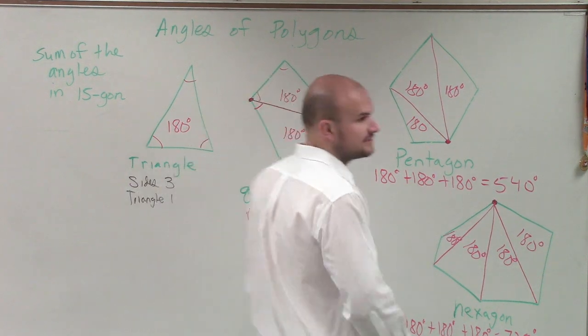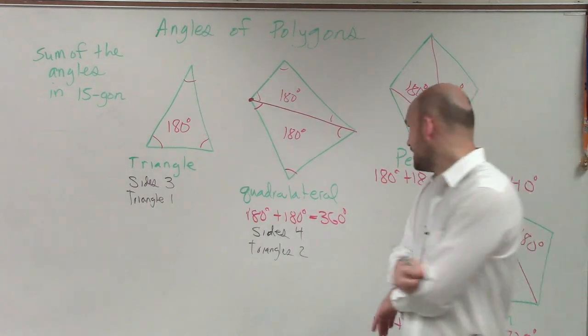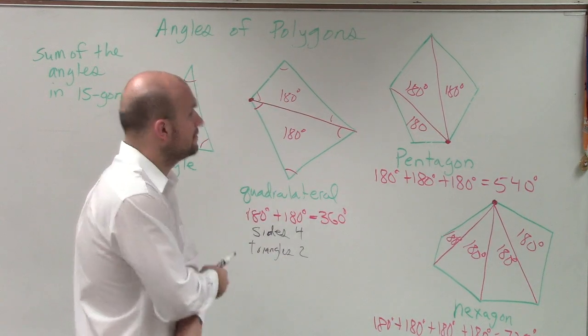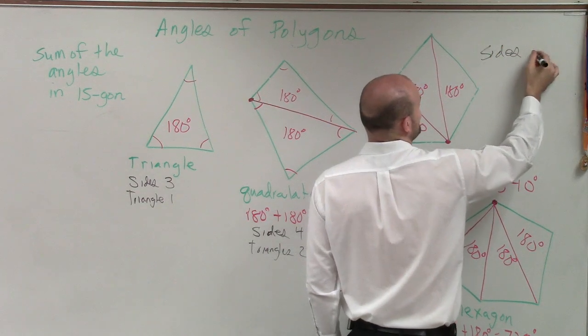All right, you guys are getting pretty good here. Oscar, on a pentagon, how many sides does the pentagon have? Five. And how many triangles can we get out of this pentagon? Three.